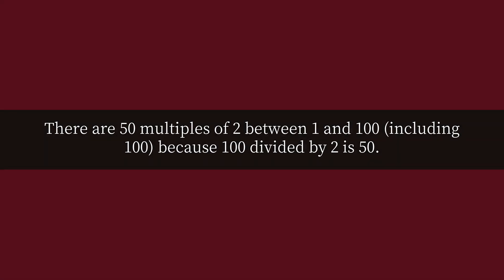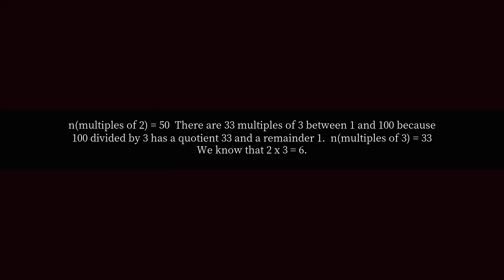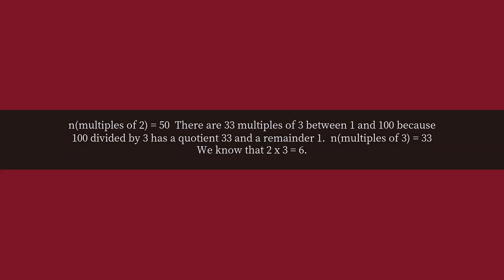There are 50 multiples of 2 between 1 and 100, including 100, because 100 divided by 2 is 50. n(multiples of 2) = 50.